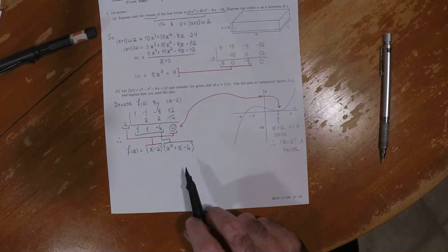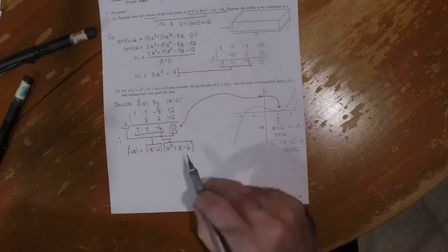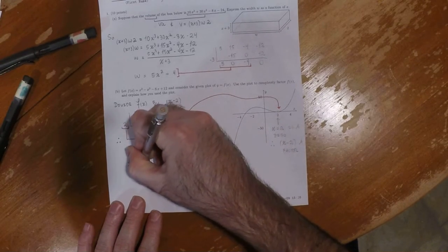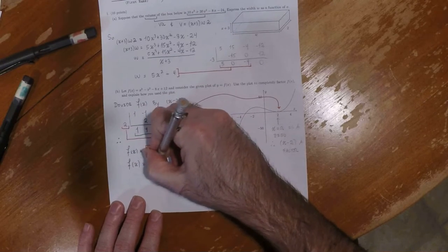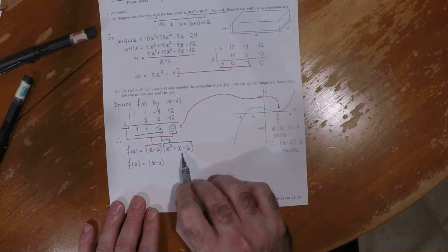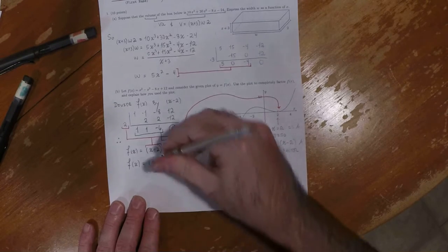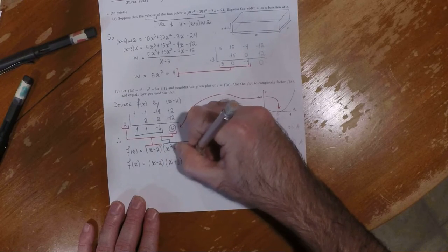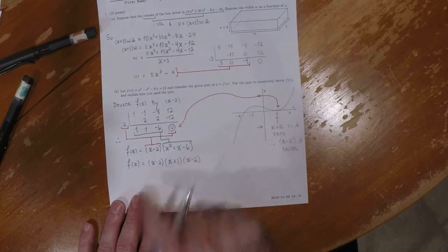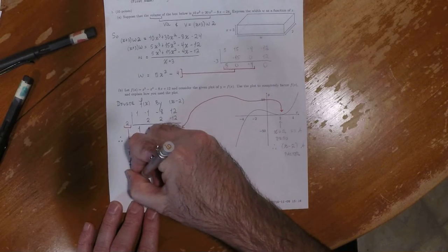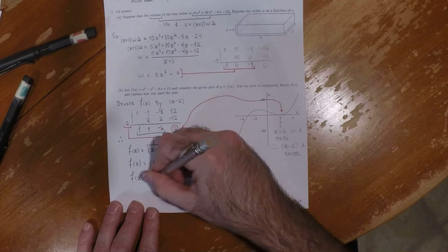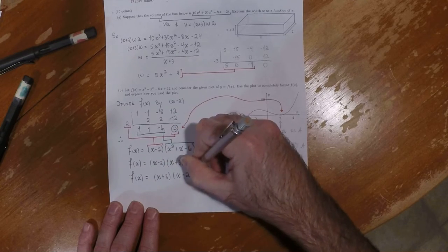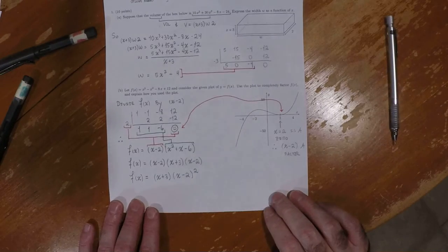Okay, so now it says completely factor. So now this is a quadratic, and it can be factored using the product sum rule. So two numbers whose product is negative 6 and whose sum is positive 1. Well, that's x plus 3 and x minus 2. So there's two of those. So you could write it as x plus 3 multiplied by x minus 2 squared. And that's the answer.